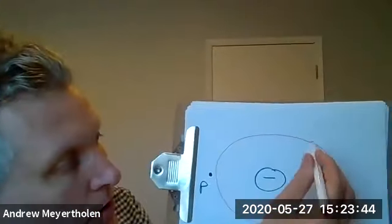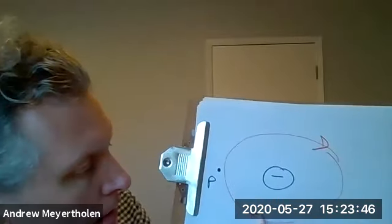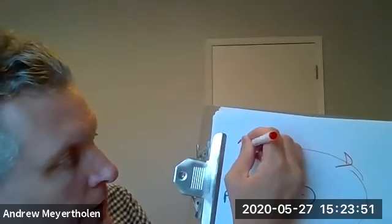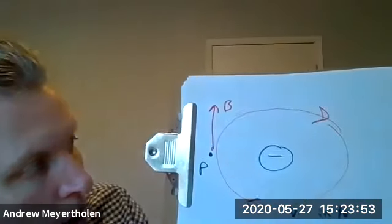And so again, if it's a positive particle, then this would be a circle going this direction right here, which would imply a magnetic field over here going upwards.